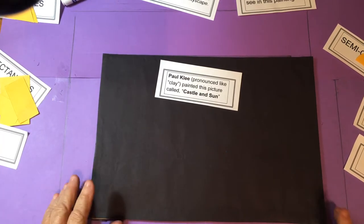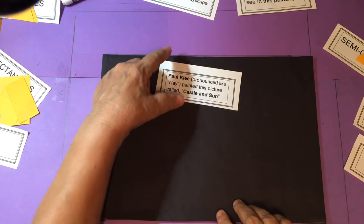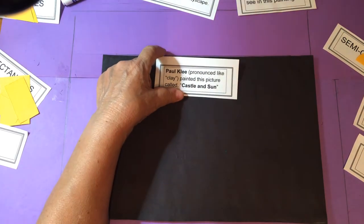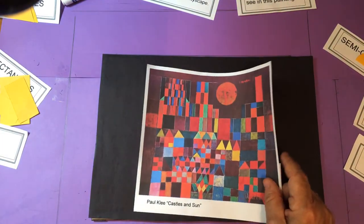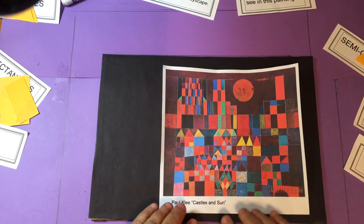But it's pronounced like clay and we're going to look at his picture. It's a painting that I have a printout of and it's called Castle and Sun. Here it is, Castle and Sun.